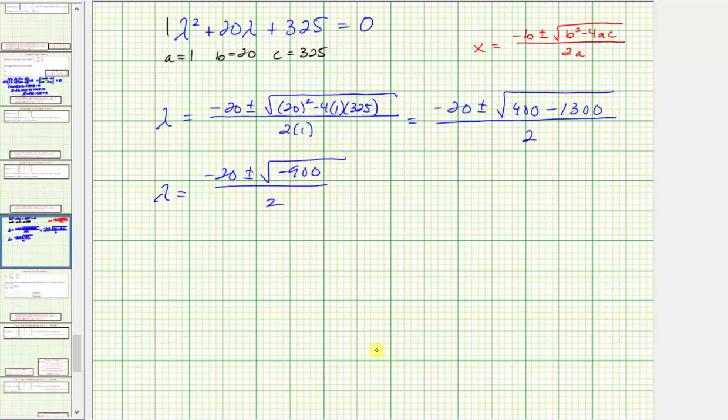The square root of negative 900 equals the square root of 900 times the square root of negative one, which equals 30i. So this simplifies to negative 20 plus or minus 30i, divided by two.